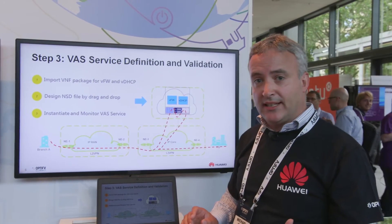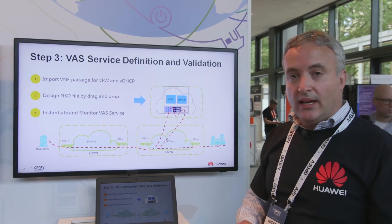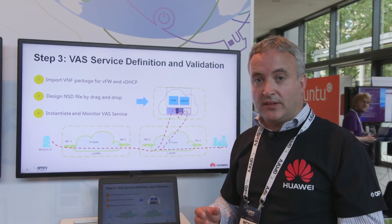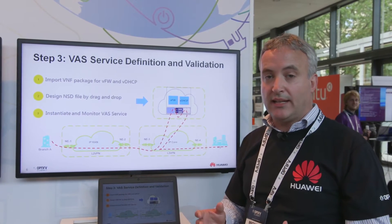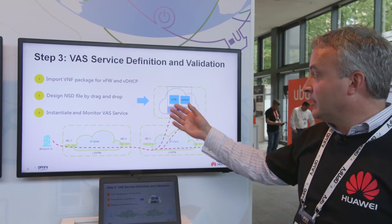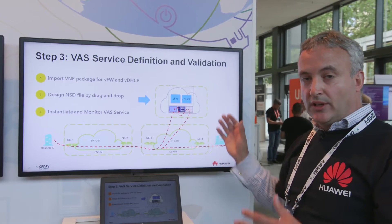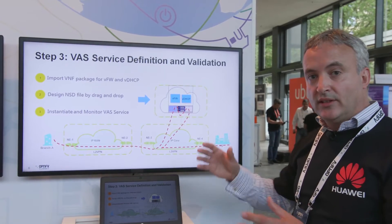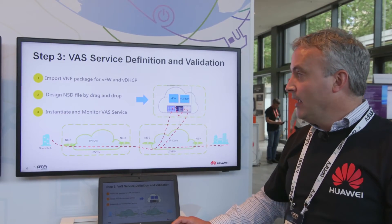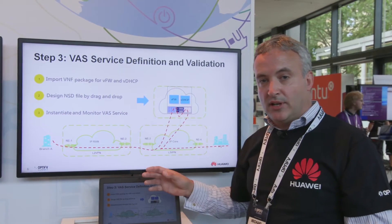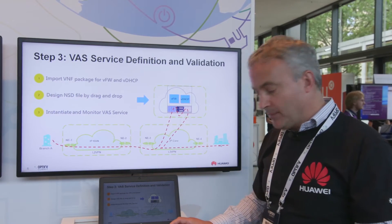Once we've got the connectivity in place, we talk about how we actually design the service components that make up the virtual network function — the functions and applications we want to give to the operator. In this case we're talking about a virtual firewall and a virtual DHCP that will run in the data center. We're going to connect the corporate sites to the data center where the value-added services are actually running. This is again done in a model-driven approach, done in conjunction with a partner who provided that capability.